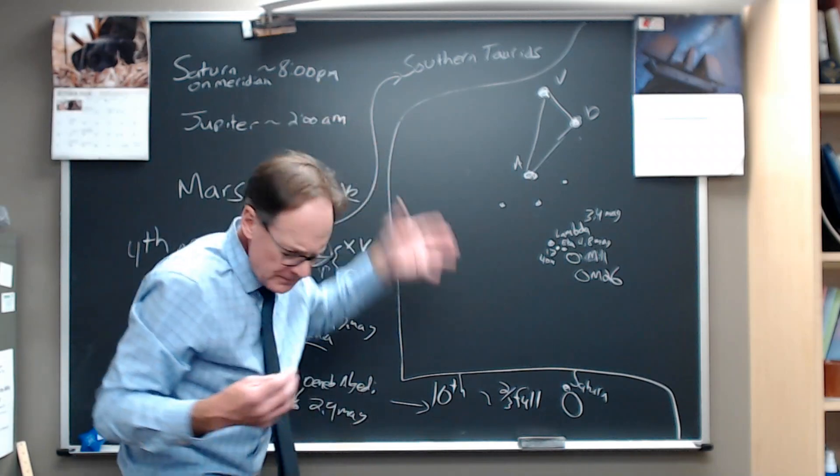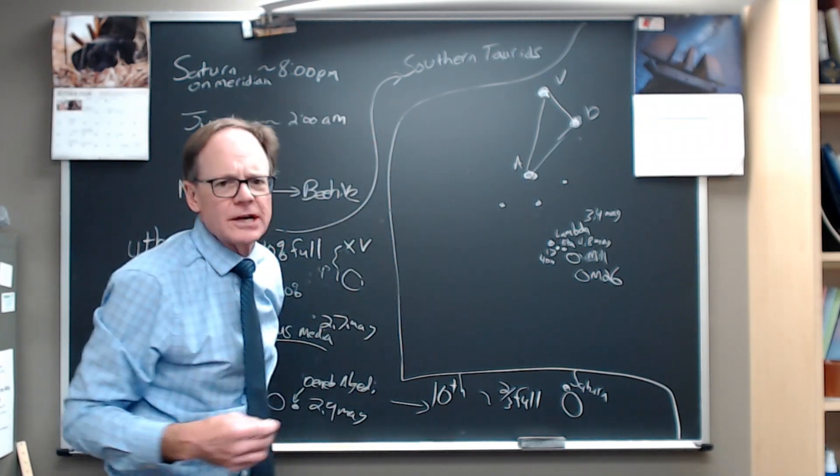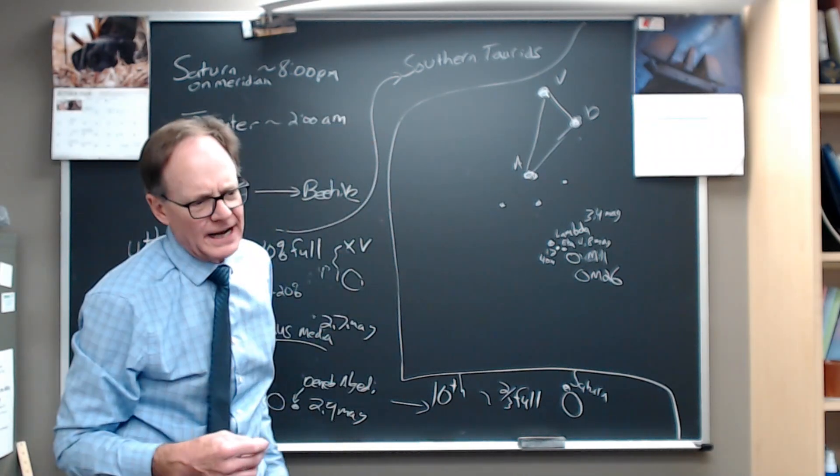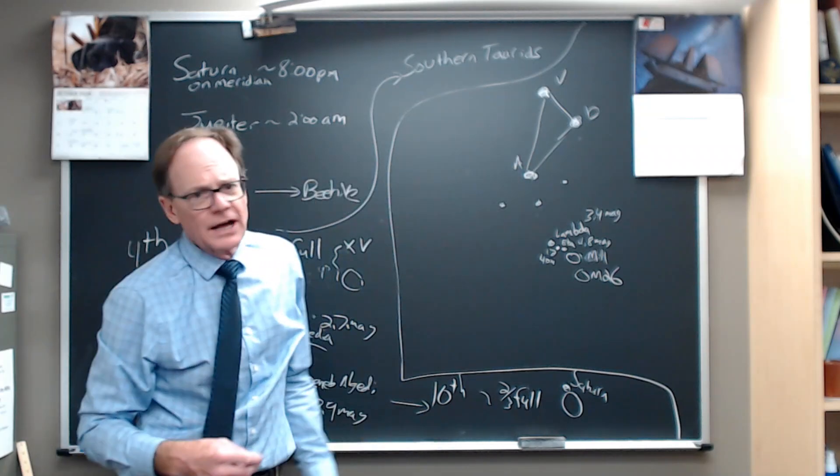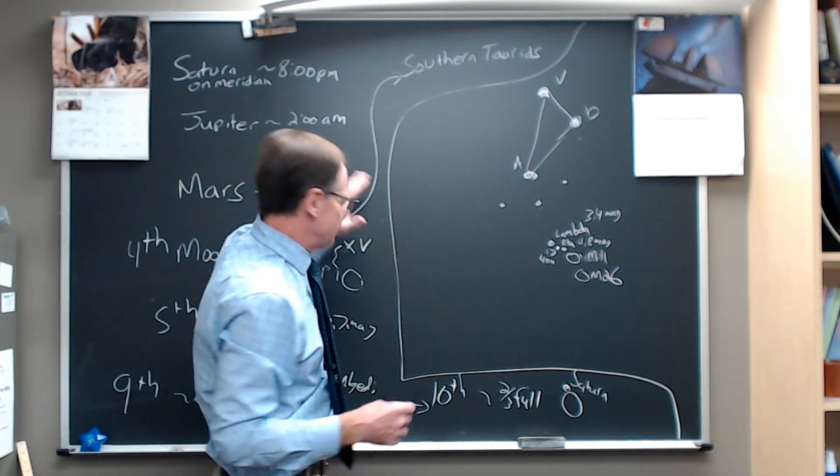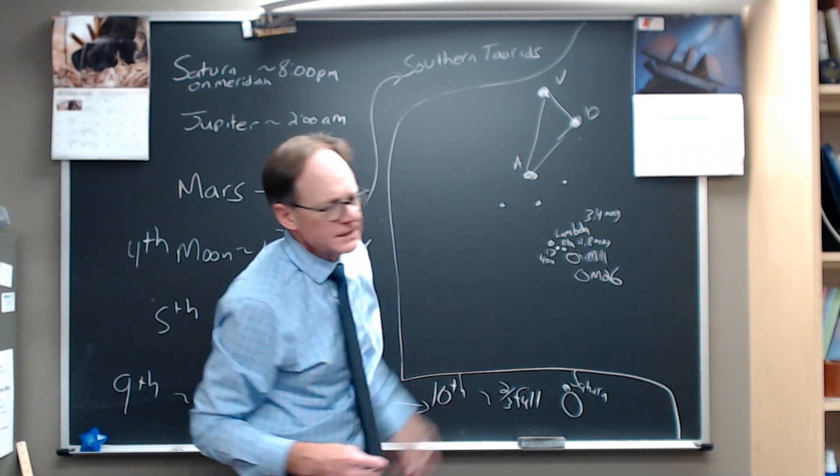And so these southern Taurids, but they look like they're coming from the constellation Taurus. Be sure to check that out. But also you're checking out, you're using Venus, you're looking above Venus. But any night that you're looking above Venus, you can see the Summer Triangle.